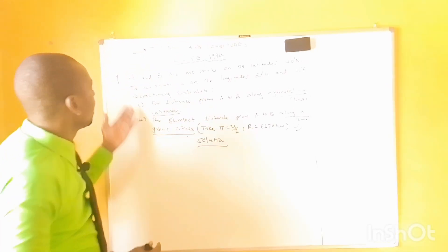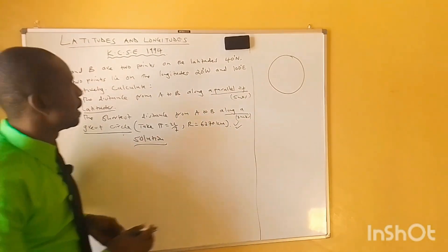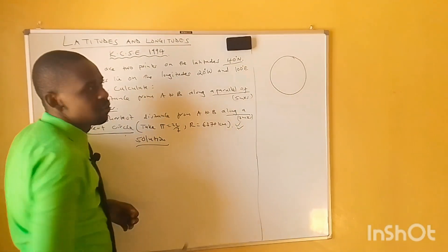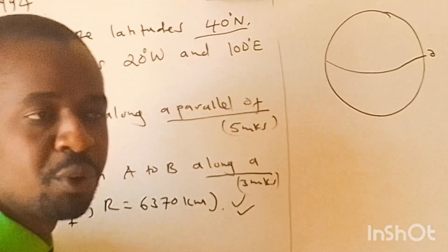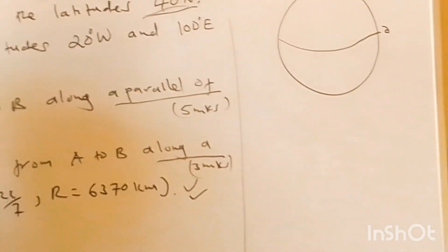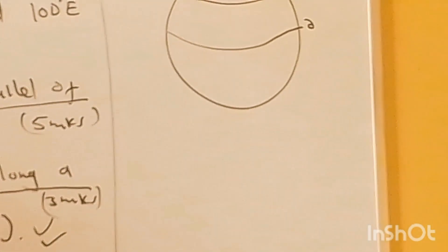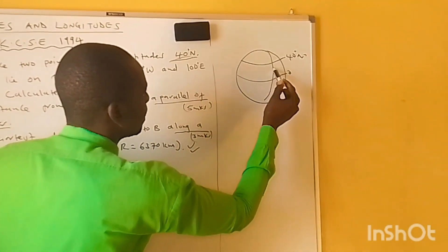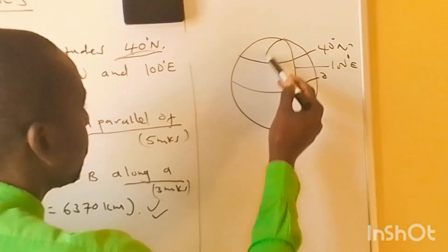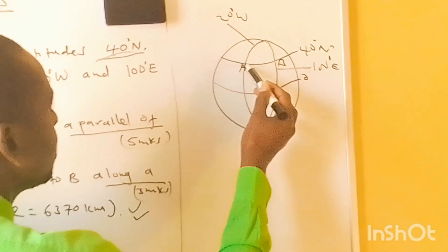Let's sketch to see where positions A and B lie. We are told it is on the latitude 40 degrees north — remember the equator is our reference. North of the equator at 40 degrees north, we have two longitudes: one is 100 degrees east and the other is 20 degrees west. So A is at 20 degrees west and B is at 100 degrees east.